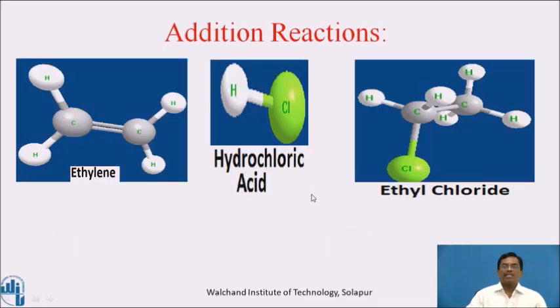This can be explained with the help of this schematic representation. This is the ethylene molecule, and this is hydrochloric acid, which gives us ethyl chloride.